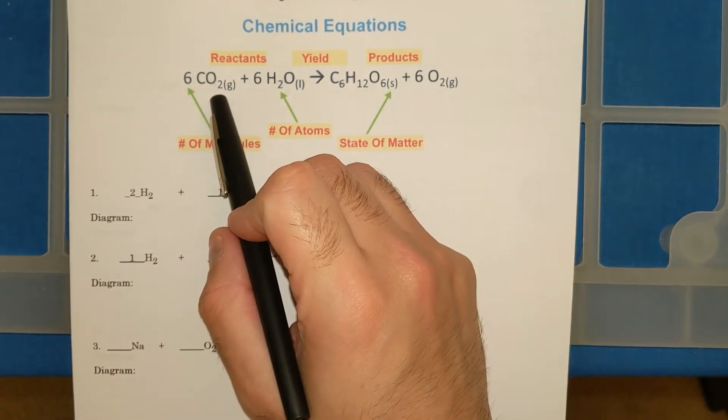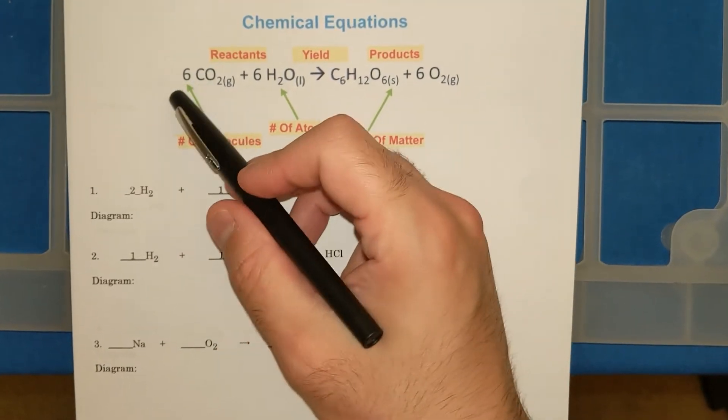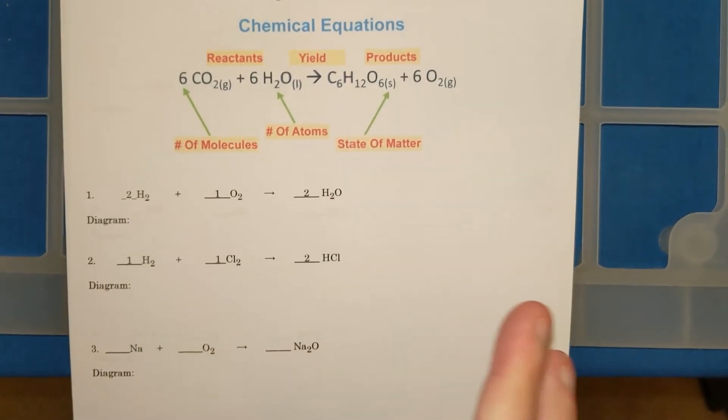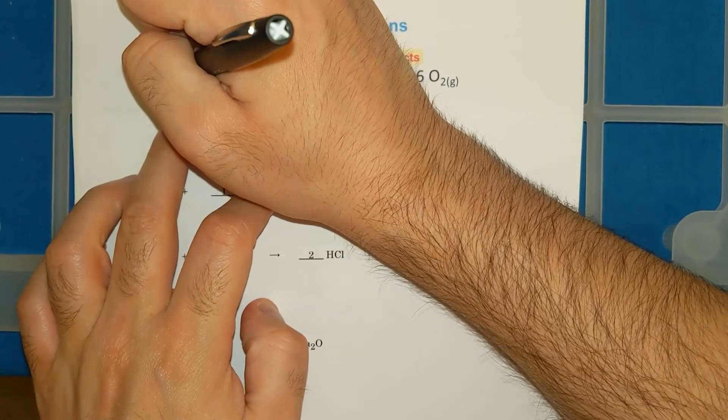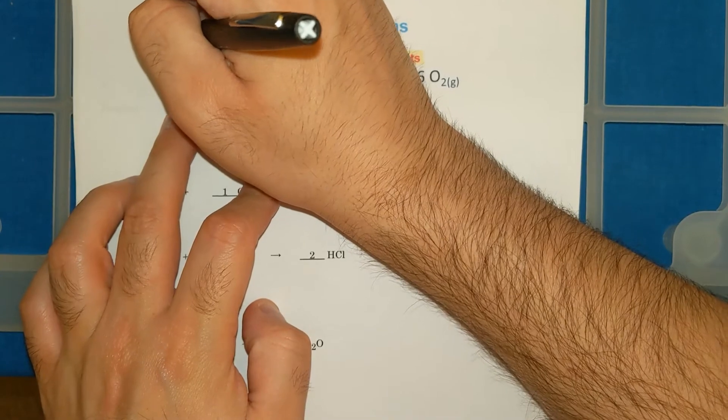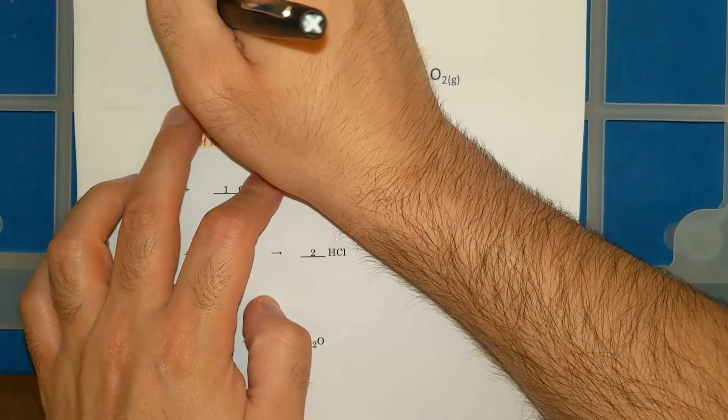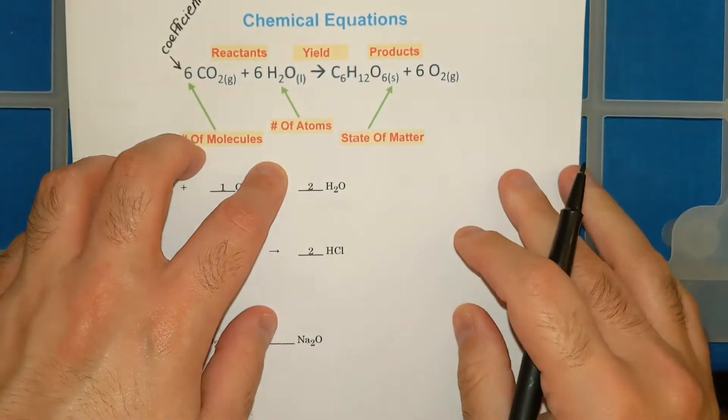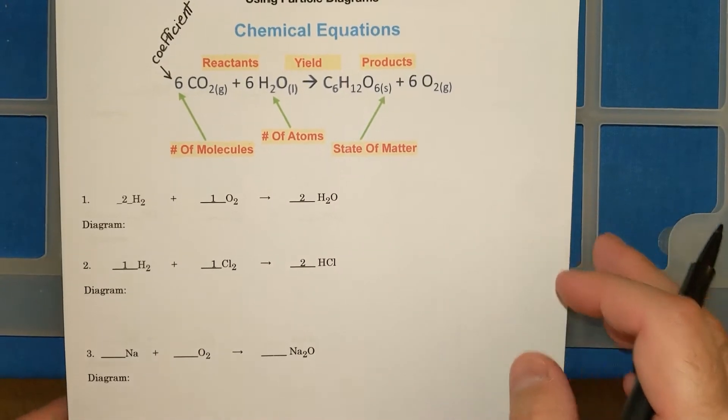These little numbers are subscripts. They help you count atoms. These numbers in the front are called coefficients, and they're used to balance a chemical equation.